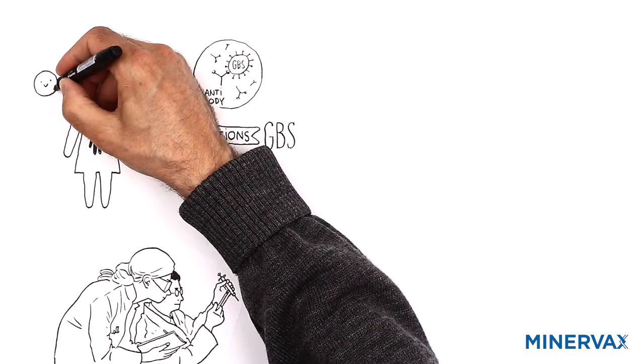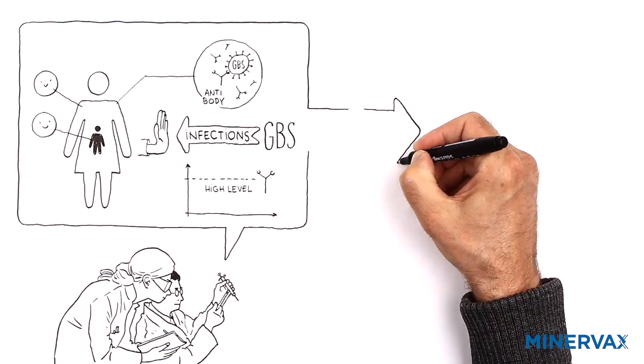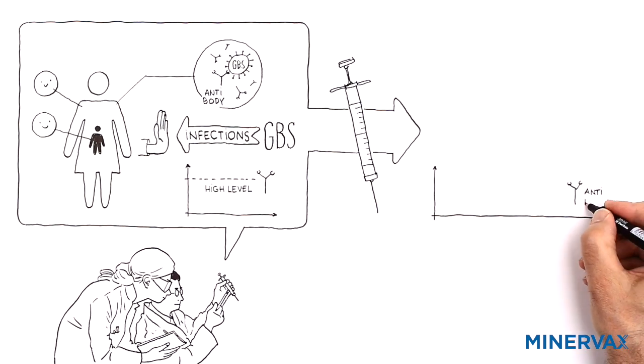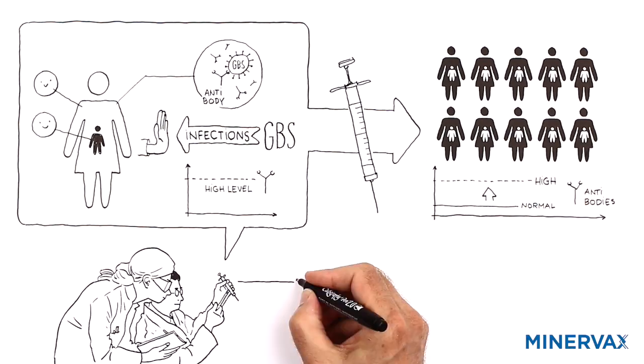Therefore, protective GBS antibodies are not foreign to the pregnant woman or the baby, and the purpose of giving a GBS vaccine is to boost the level of GBS antibodies so that such protective levels can be achieved in all pregnant women.